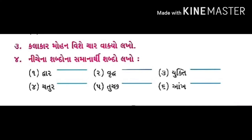પ્રશ્ન ત્રણ: કલાકાર મોહન વિશે ચાર વાક્ય લખો. મિત્રો, અહીં ચાર વાક્ય લખવાનાં કહ્યાં છે, તમે એનાથી વધારે પણ લખી શકો છો. અહીં કલાકાર મોહન શું કામ કરતો હતો, તેનું પૂરું નામ શું હતું, લોકો તેને કયા નામથી બોલાવતા હતા — વગેરે લખવાનું છે. જેમ કે: મોહન એક શિલ્પી હતો, તેનું ખરું નામ તૂલ મોહન હતું.